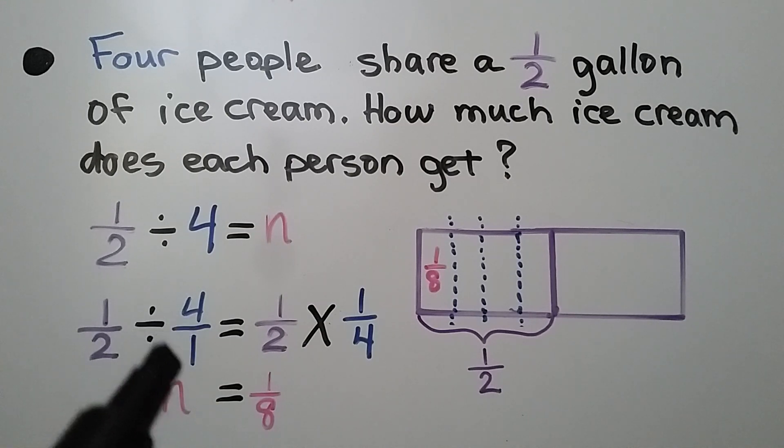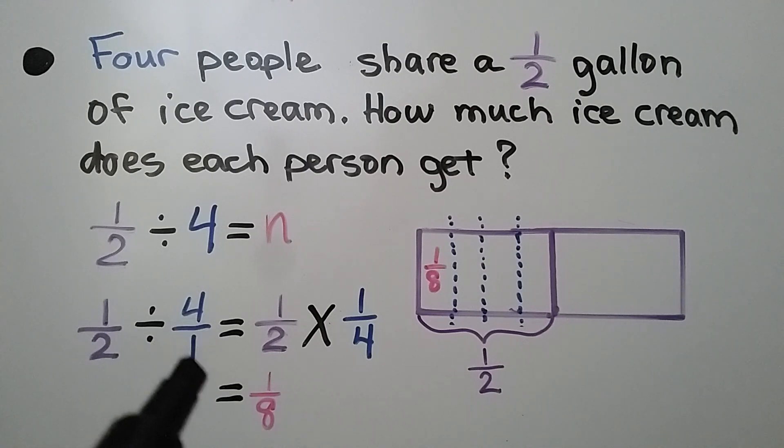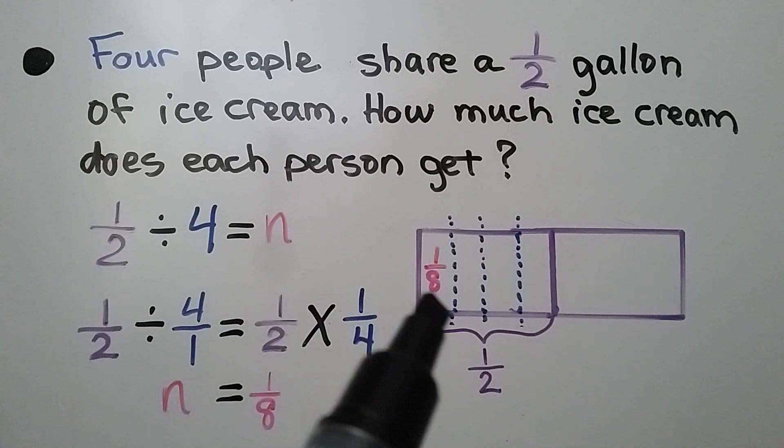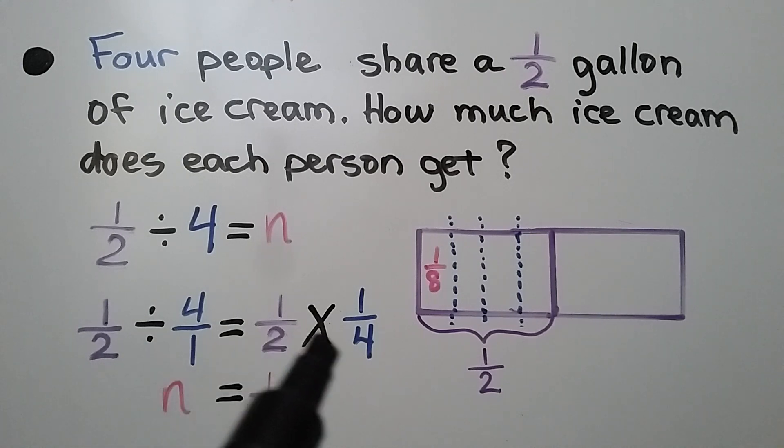1 half divided by 4 can be written as 1 half divided by 4 over 1, writing the 4 as a fraction. We multiply by the reciprocal of this fraction by flipping it around upside down as 1 fourth. And 1 half times 1 fourth, we multiply the numerator straight across and get 1. The denominator straight across, we get 8. We know n is equal to 1 eighth.